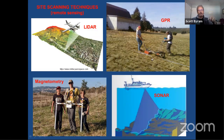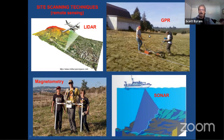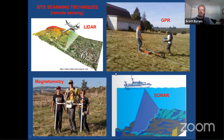GPR can be used in freshwater, although it's rarely done since salt is not an issue there. Ground penetrating radar is the technique we often use on land, and it provides the greatest detail of any remote sensing technique for below the surface. It's especially valuable in that it allows us to look at the depth of different features — in contrast with magnetometry, which is two-dimensional and only shows the magnitude of magnetic information at a particular location.